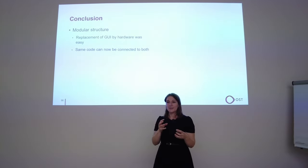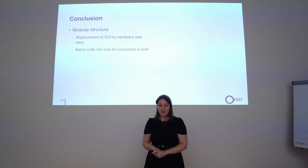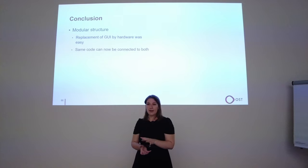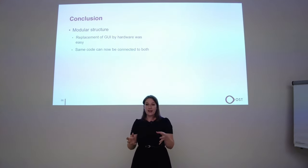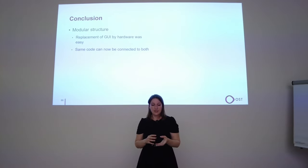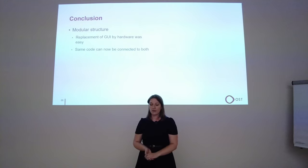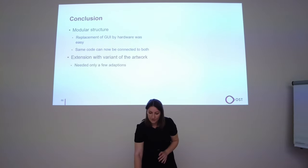The real artwork looks a bit better than my implementation because I didn't have much time to find the right parameters for the movement, but I showed that it's possible to use Haskell with this artwork. The modular structure from FRP was a great help when replacing the UI with the hardware, because I only had to change the inputs and outputs — I didn't have to change the pygmies code. Now the same code can be connected to both the artwork hardware and the UI, so you can test things with the UI before using them on hardware. The position signal is the same for both the UI and the hardware, so they behave identically.